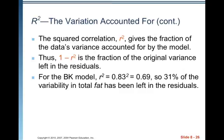Thus, 1 minus R squared is the fraction of the original variance left in the residuals. For the BK model, R squared equals 0.83 squared, or 0.69. So, 31% of the variability in total fat has been left in the residuals. The good news is that 69% of the variability in total fat has been explained by its linear model with protein.